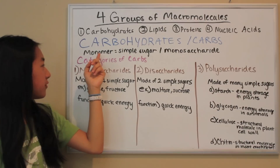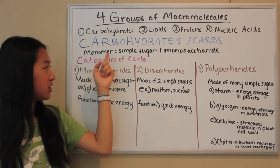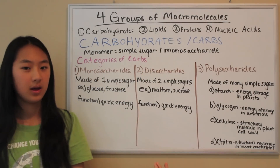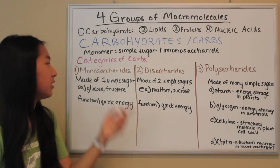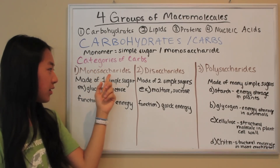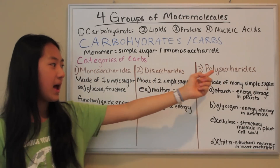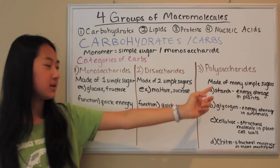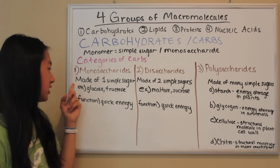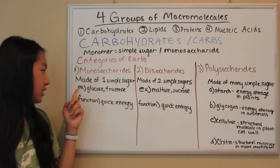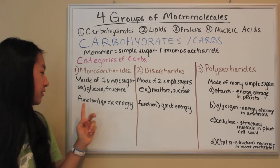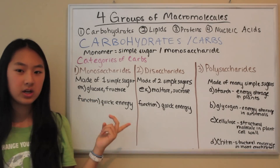The monomer of carbohydrates is called a simple sugar or a monosaccharide — they're both the same thing. There are three categories of carbs: monosaccharides, disaccharides, and polysaccharides. Monosaccharides are made of one simple sugar, for example glucose or fructose, and their function is quick energy.